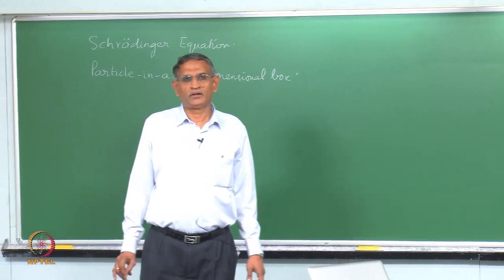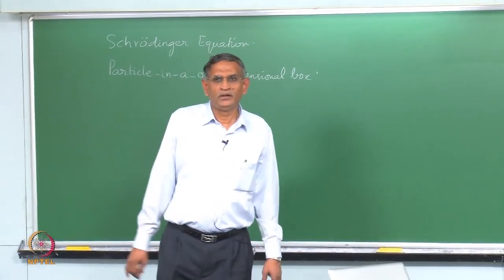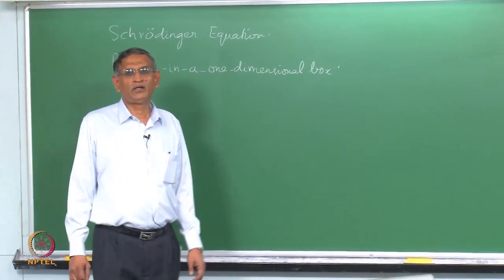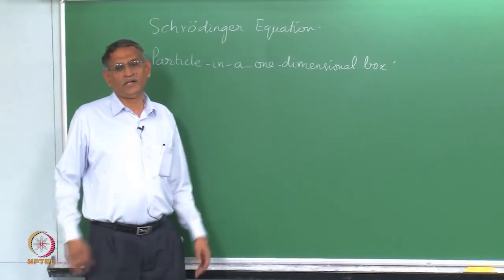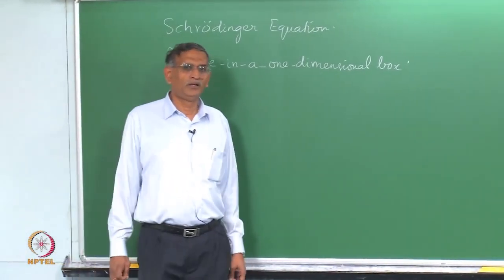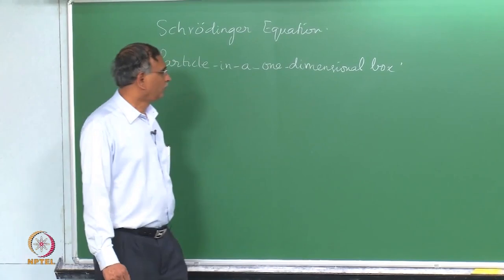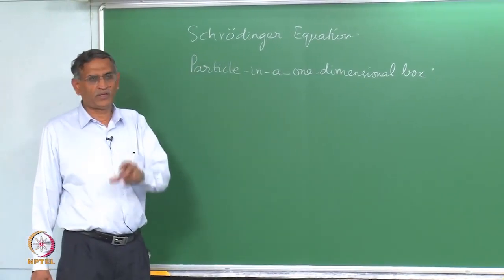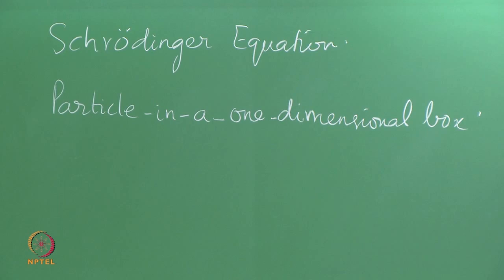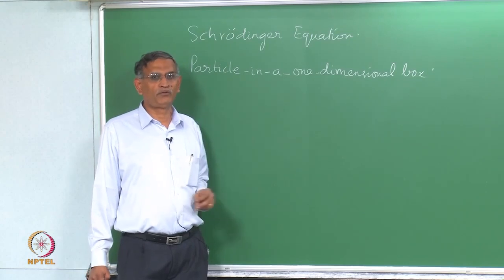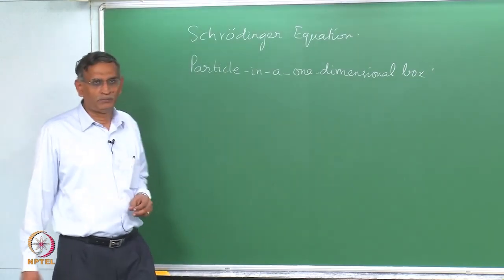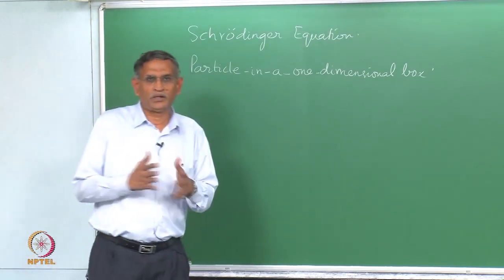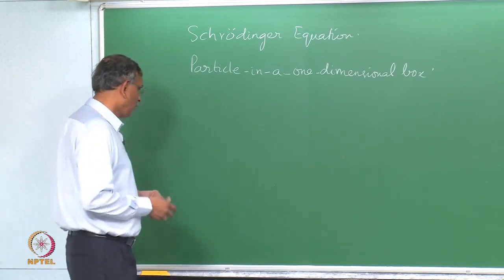Welcome back to the lecture for introductory chemistry using Schrödinger and quantum mechanical methods for atomic structure. What we will do in this and the next segment is introduce the Schrödinger equation and also do a model problem using the particle in a one-dimensional box model. This is one of the simplest models that we have.